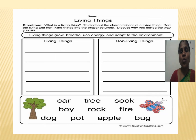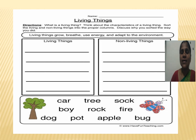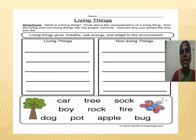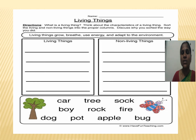Let me summarize what we have discussed. We discussed all the characteristics of living things: movement, growth, feel, food, and reproduction. I have given a worksheet as an assignment. You have to complete it — fill in the given words in the correct columns, sorting living things and non-living things into proper columns, discuss why you sorted them that way, and revise all the points.